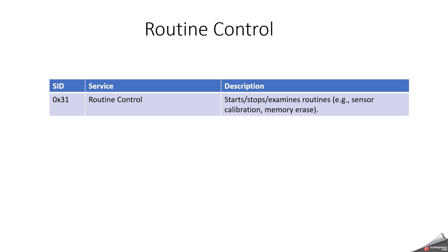Routine Control is also a very famous service — its Service ID is 0x31. It supports start, stop, or request routine operations, for example sensor calibration or memory erase. This is also majorly used during ECU flashing.